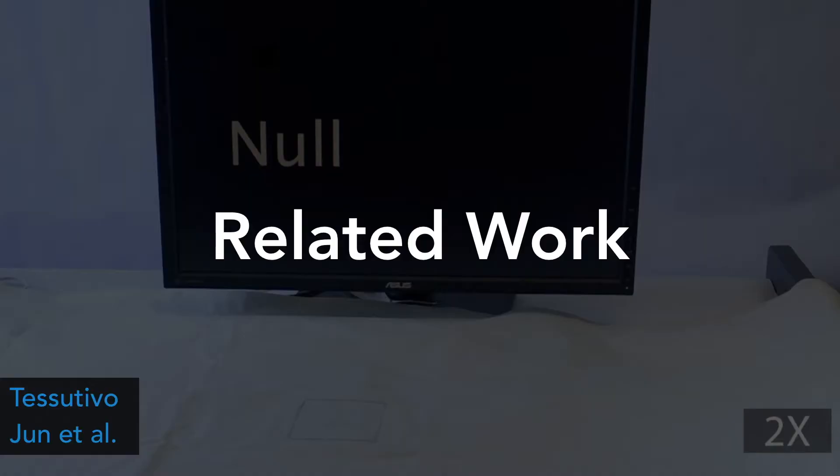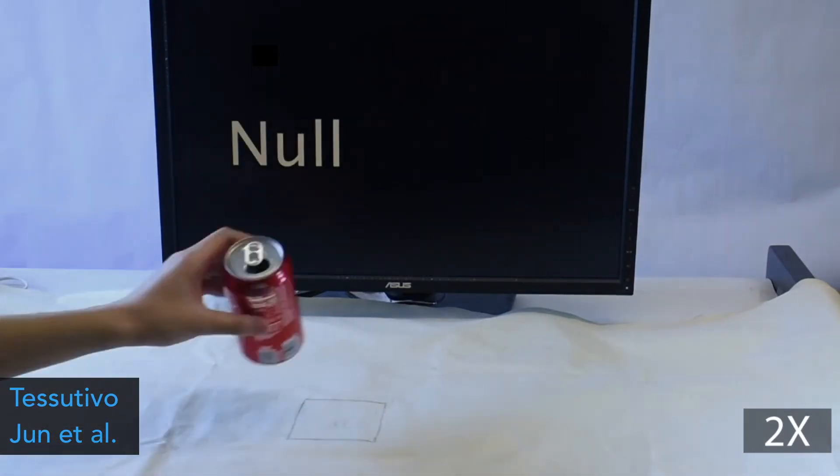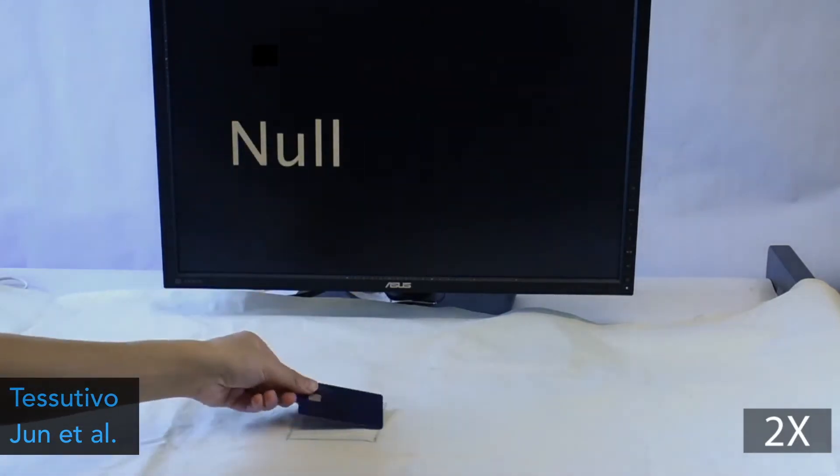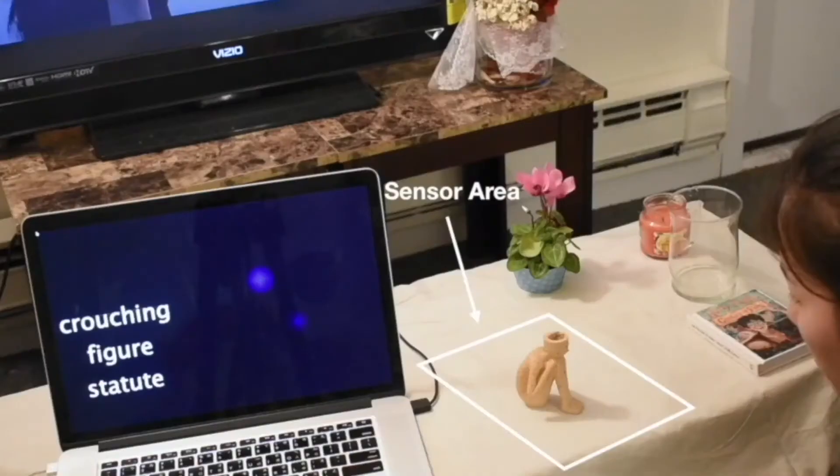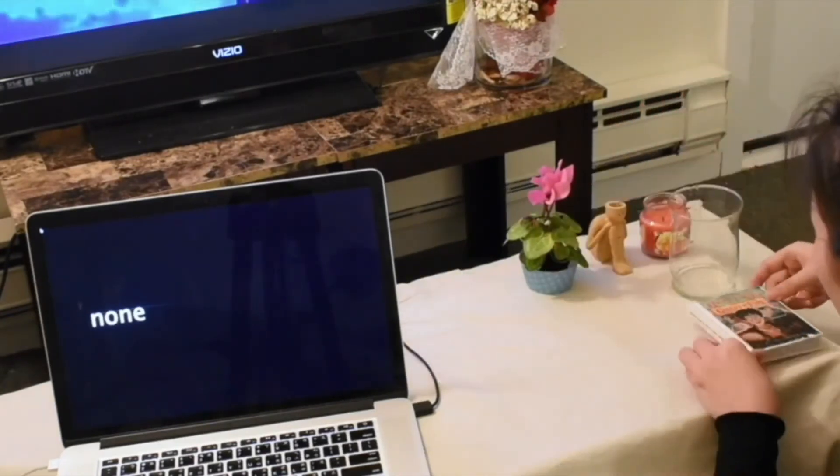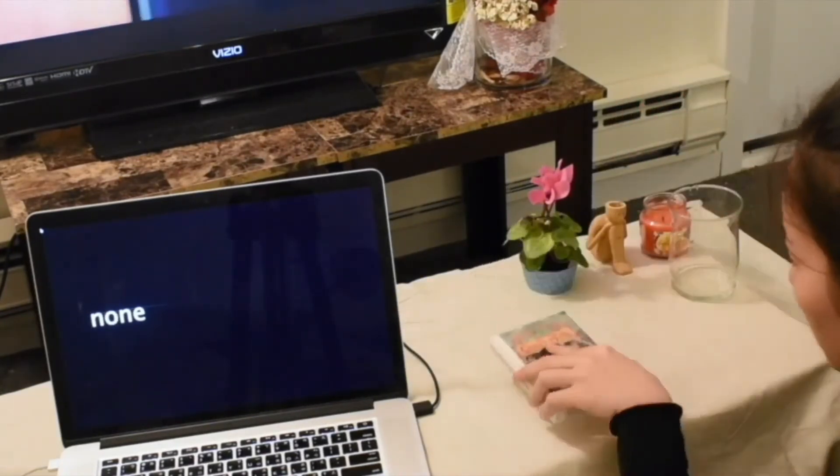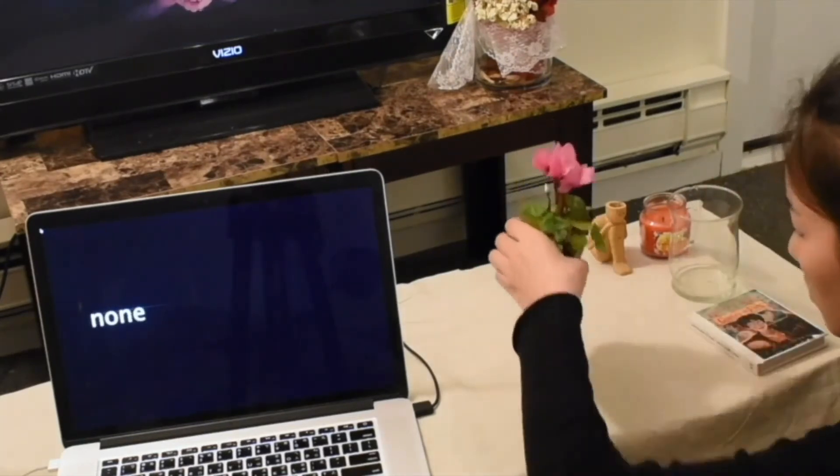Although there are a number of techniques to enable interactive fabric, the one most related to Capacitivo is Testivo by Jun Gong et al. Testivo demonstrates an interactive fabric to recognize metallic objects based on inductance. In contrast, our work focuses on non-metallic objects that are also very common in daily life. Our work complements existing research with a new sensing technique that is based on capacitance.